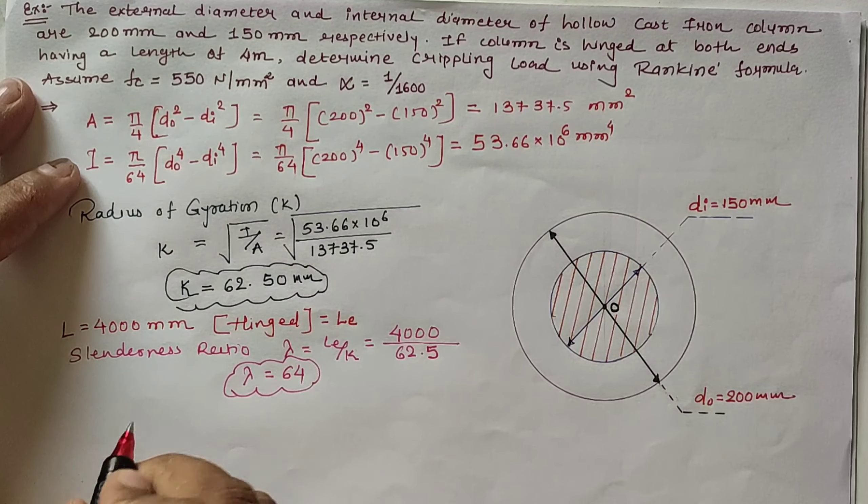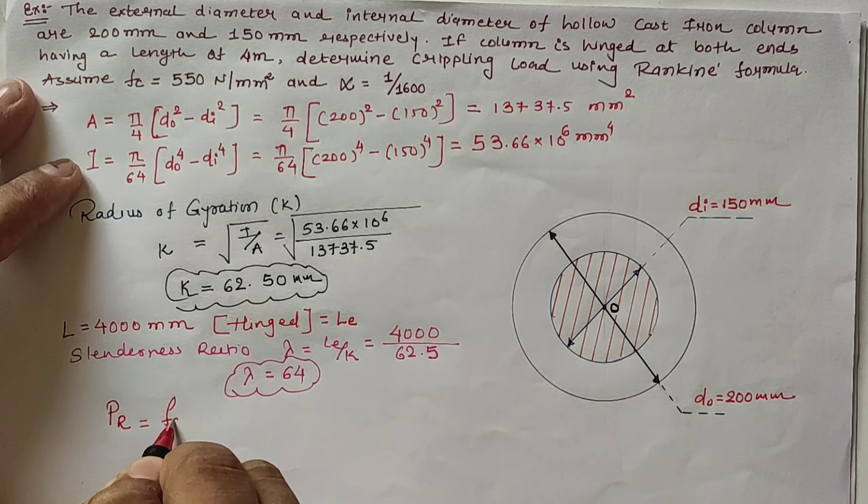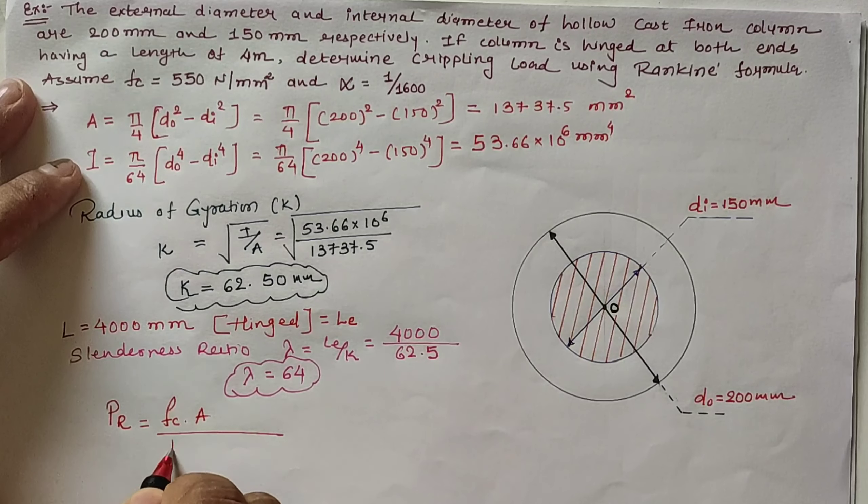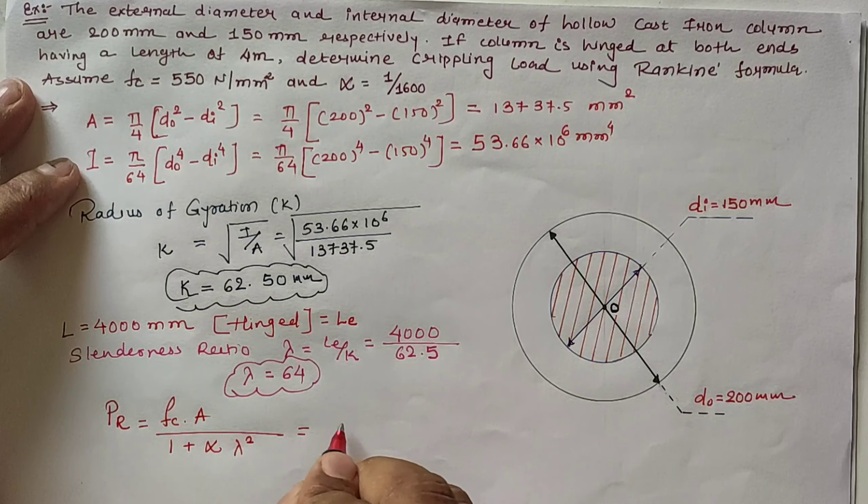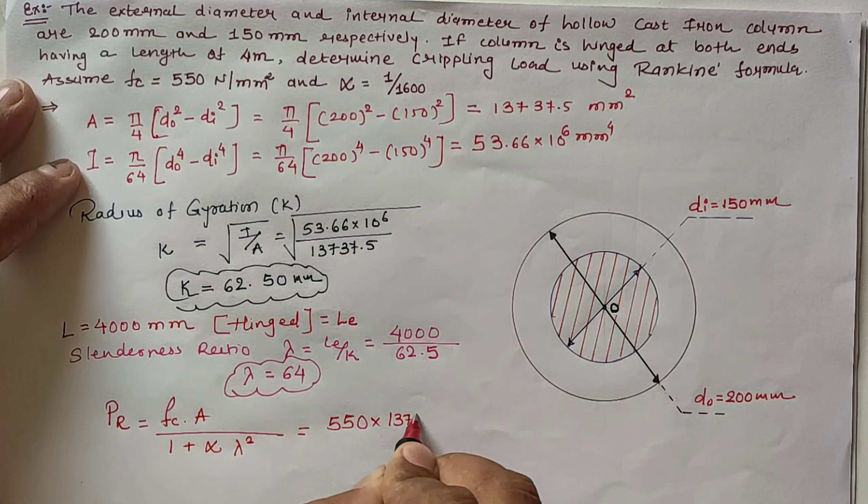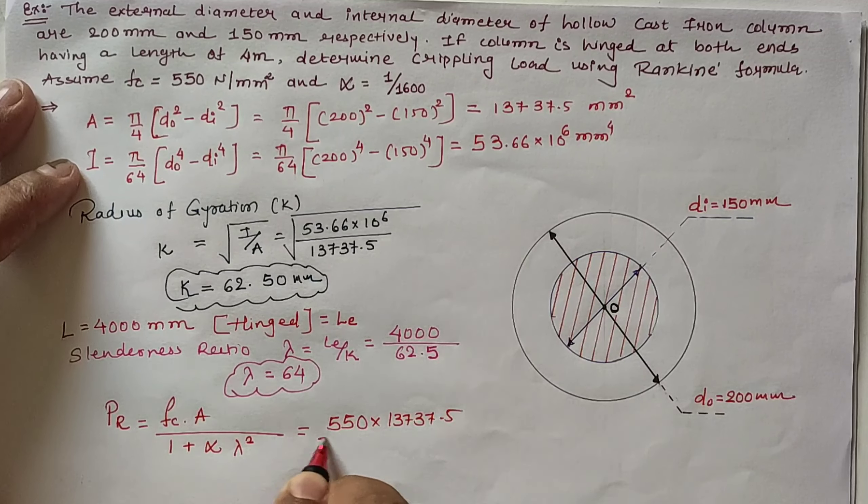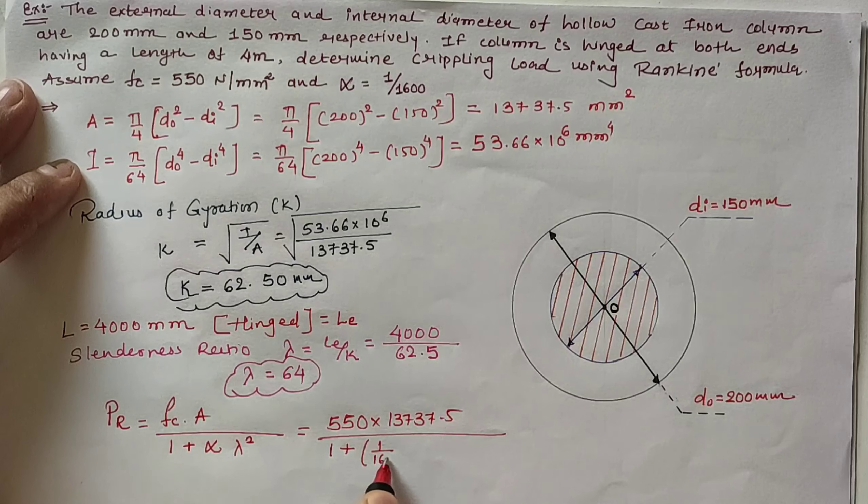The Rankine formula is PR = (FC × A)/(1 + α × λ²). With FC = 550 N/mm², A = 13,737.5 mm², α = 1/1600, and λ = 64, we substitute these values.